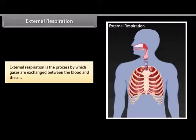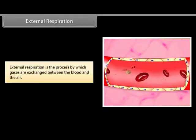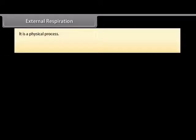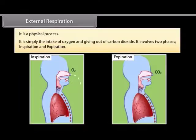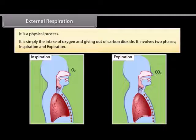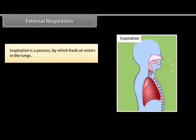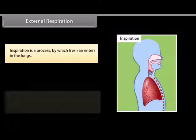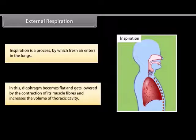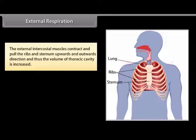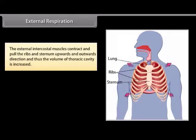External respiration is the process by which gases are exchanged between the blood and the air. It is a physical process — simply the intake of oxygen and giving out of carbon dioxide. It involves two phases: inspiration and expiration. Inspiration is the process by which fresh air enters the lungs; the diaphragm becomes flat and gets lowered by the contraction of its muscle fibers, increasing the volume of the thoracic cavity. The external intercostal muscles contract and pull the ribs and sternum upwards and outwards.